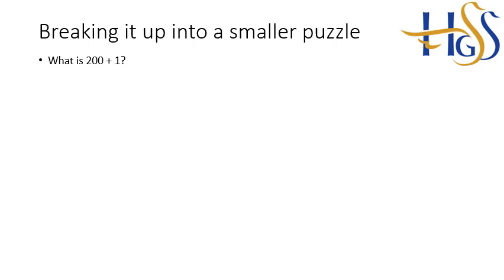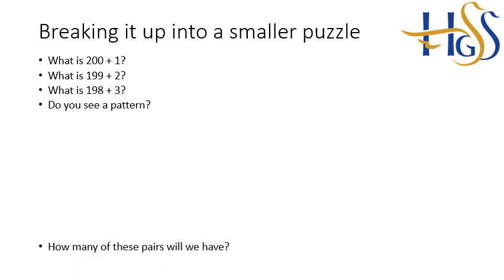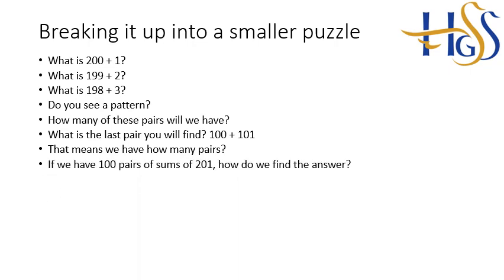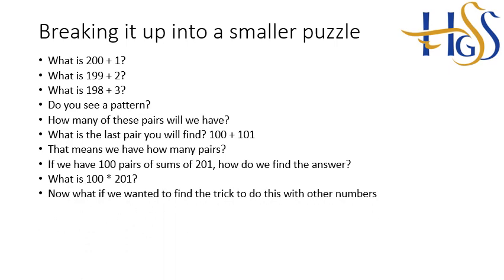I'm going to give you the answer because it's really simple and it's a brilliant technique to do to anybody. Little party trick. Breaking it up into a smaller puzzle. What is 200 plus 1? What is 199 plus 2? What is 198 plus 3? Can you see where I'm going with this? Do you see a pattern? How many of these pairs will you have between 1 and 200? What is the last pair you'll find? 100 plus 101. What does it equal? It still comes up to 201. That means we have how many pairs? So if we have 100 pairs of sums of 201, how do we find the answer? What is 100 times 201?